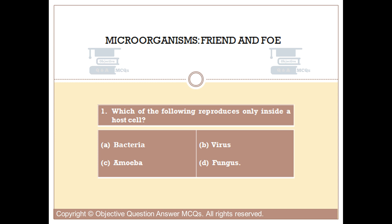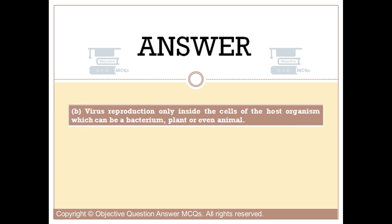Question number one. Which of the following reproduces only inside a host cell? Option A: Bacteria. Option B: Virus. Option C: Amoeba. Option D: Fungus. The right answer is option B. Virus reproduces only inside the cells of the host organism, which can be a bacterium, plant, or even an animal.